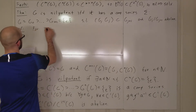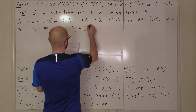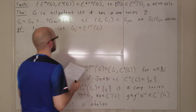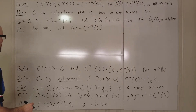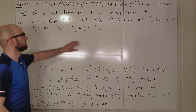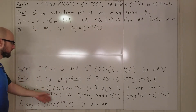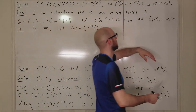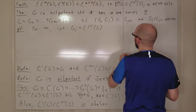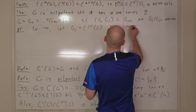For the forward direction, let G_j = C^{j+1}(G). We know G is nilpotent so eventually this becomes the identity, and we proved everything last time that this composition series satisfies all the required conditions. So the forward direction doesn't require us to do anything beyond what we've already done.